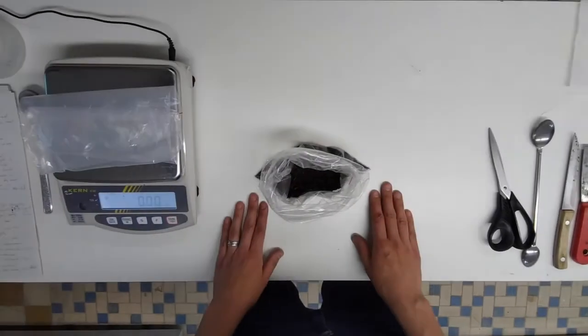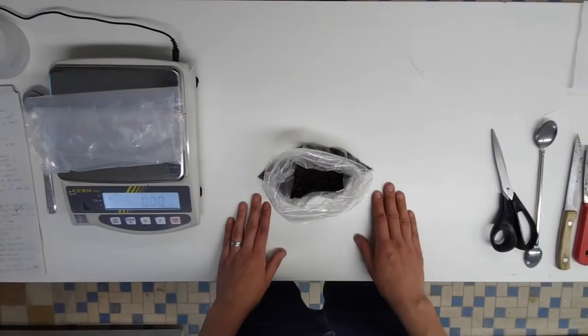We use half of the 5cm soil core collected for wet extraction to extract nematodes and another half to extract anhytrates, which is covered in another video.